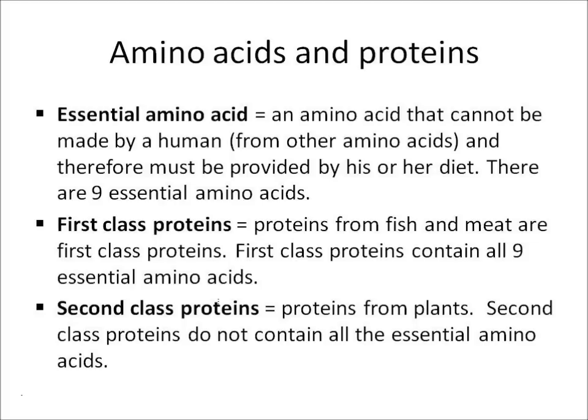At the higher level, you need to know that proteins are broken down into molecules called amino acids. Of the 20 or so amino acids that exist, there are 9 essential amino acids. An essential amino acid is one that cannot be made by a human and has to be provided in his or her diet.